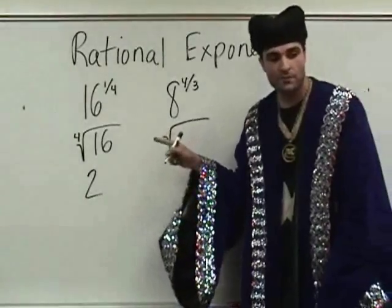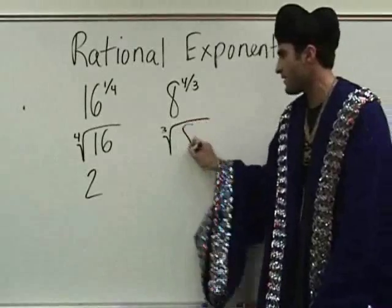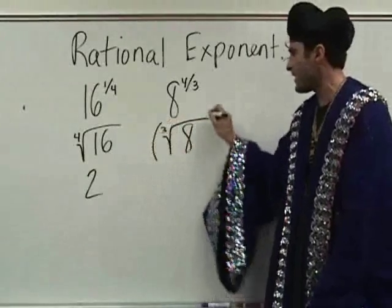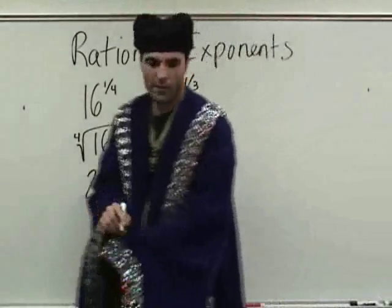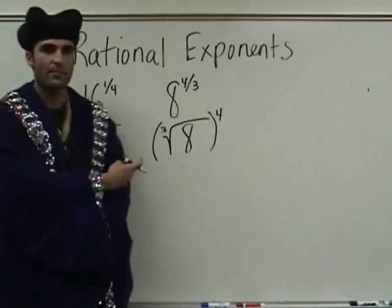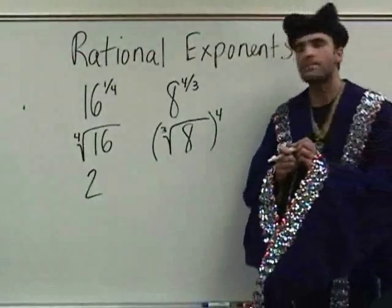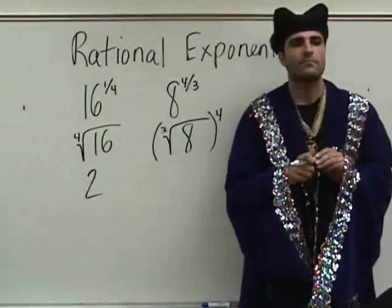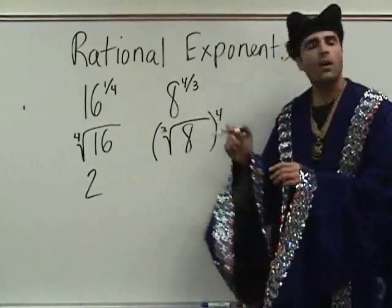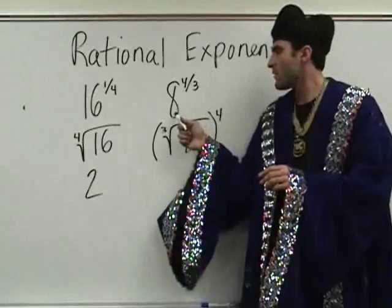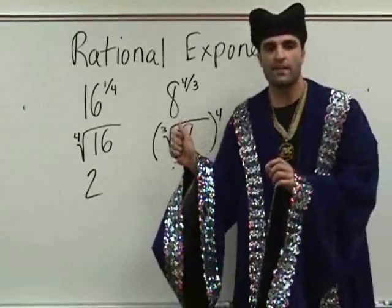What goes inside? Eight. And what goes outside? To the fourth power. Okay, this is the problem. Is it possible to take the four-thirds and make it over one-third? No, it doesn't work like that. Exponents don't work like that.